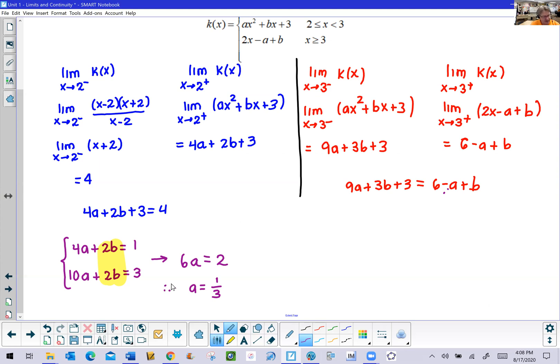Now that you found that a value, you simply have to plug that back into either of these two equations. Does not matter which; it seems like the top one might be as good as any. Replace that a with one-third and now solve for b. Four times one-third is four-thirds. We subtract four-thirds over to the other side. One minus four-thirds I believe is negative one-third, and then when we divide by two we have negative one-sixth. So you have found the value of a and b that's going to satisfy the directive of the problem that makes this k of x function continuous.